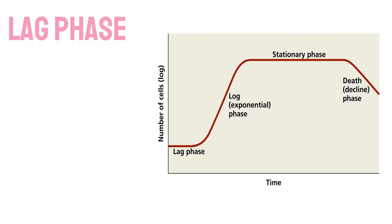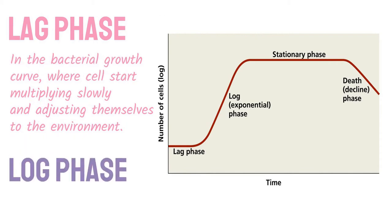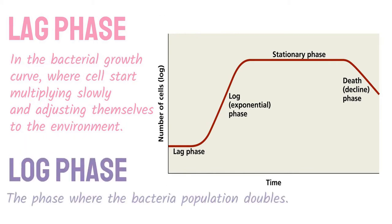Lag phase and log phase in the bacterial growth curve. In the lag phase, cells start multiplying slowly and adjusting themselves to the environment. In the log phase, the bacteria population doubles.